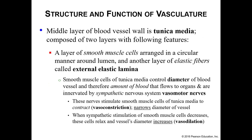Our tunica media, our middle layer, technically has two parts. We've got a layer of smooth muscle cells arranged in a circular manner around the lumen, and then we have an elastic fiber layer called the external elastic lamina. The smooth muscle cells are responsible for controlling the diameter of the blood vessel, which ultimately controls the amount of blood that flows to an organ. These smooth muscles are directly innervated by the sympathetic nervous system — we call these nerves your vasomotor nerves. Vaso as in vessel, motor as in movement. We have two options: we can either decrease the diameter through vasoconstriction, or we can increase the diameter through vasodilation.